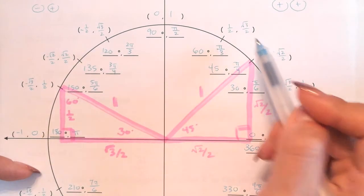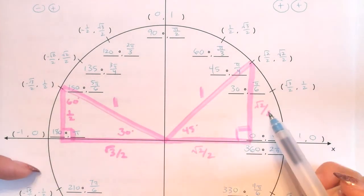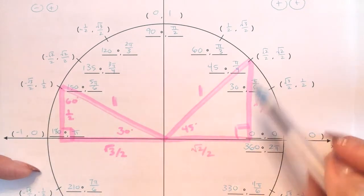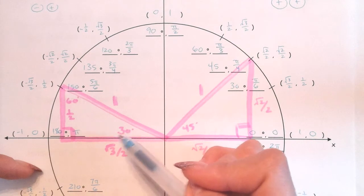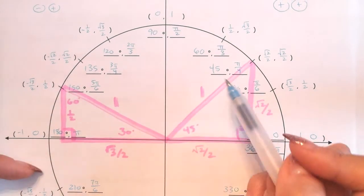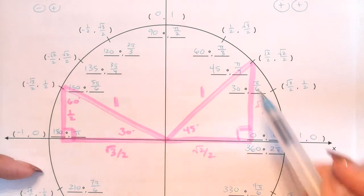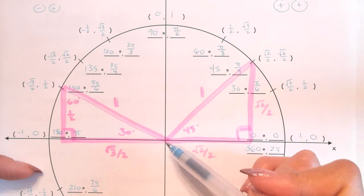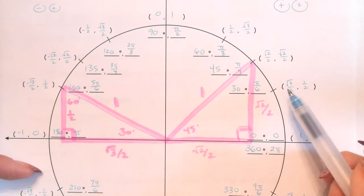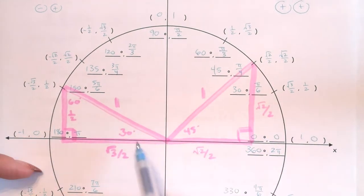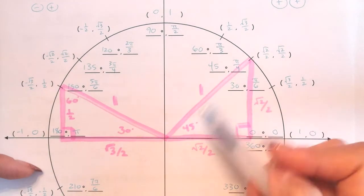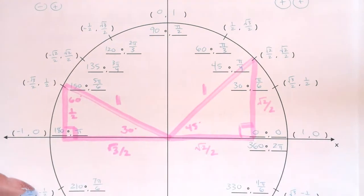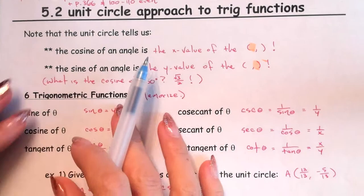Sine will always be the y value because sine is always opposite over hypotenuse. The opposite of 45 degrees is a y value; the opposite of 30 degrees is a y value. On the unit circle it's always opposite — a y value — over 1, because the unit circle has a radius of 1. Cosine is always adjacent, the x value, over 1. That's why cosine is x and sine is y, always on a unit circle.